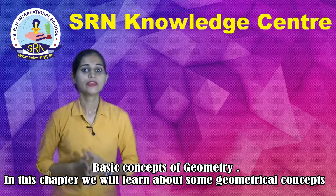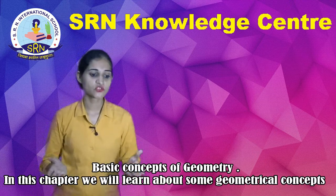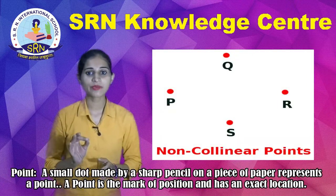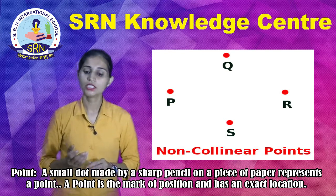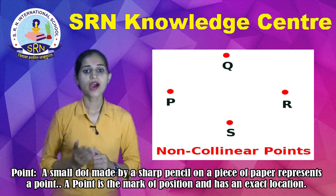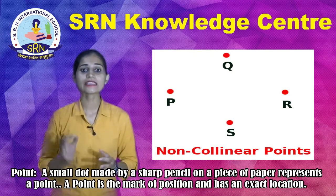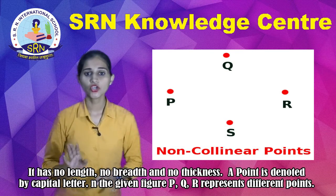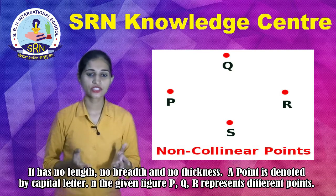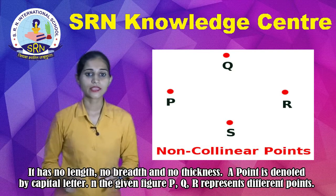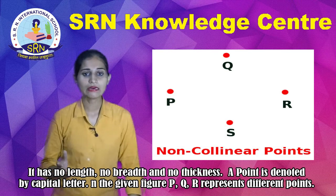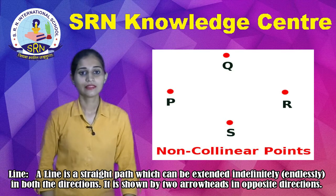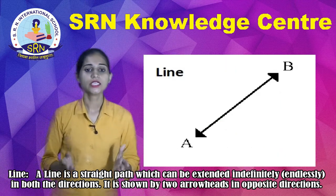Basic concepts of geometry. In this chapter we learn about some geometrical concepts. Number one is Point. A dot made by a sharp pencil on a piece of paper represents a point. A point is the mark of position and has exact location. It has no length, no breadth, and no thickness. A point is denoted by a capital letter. In the given figure, P, Q, R represent different points.